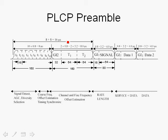The total length of the preamble is 16 microseconds. The short symbols are used for automatic gain control, packet detection, diversity selection, signal detection, coarse carrier frequency offset estimation, and initial coarse timing. The short symbols are also used for packet detection — to ensure with some reliability that the received energy is in fact an OFDM packet and not a jammer or noise of some sort.